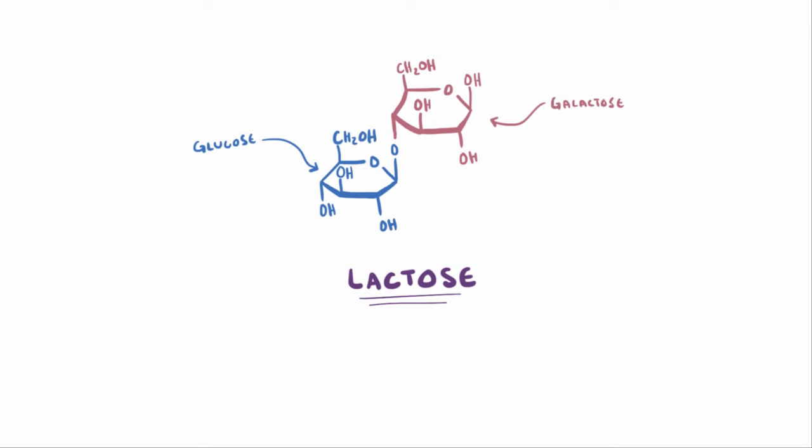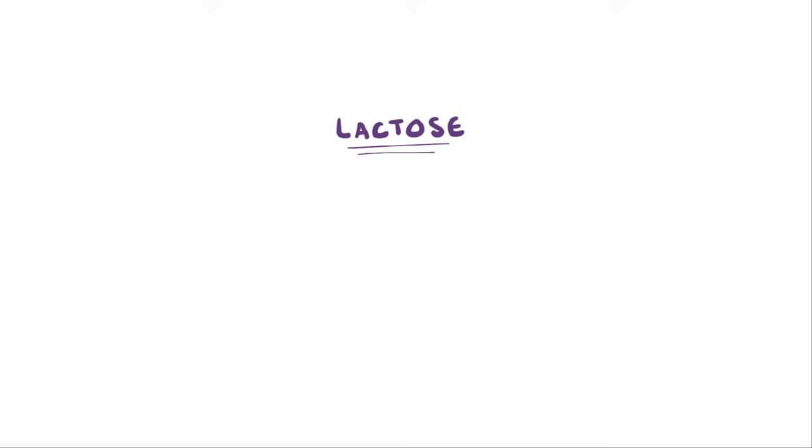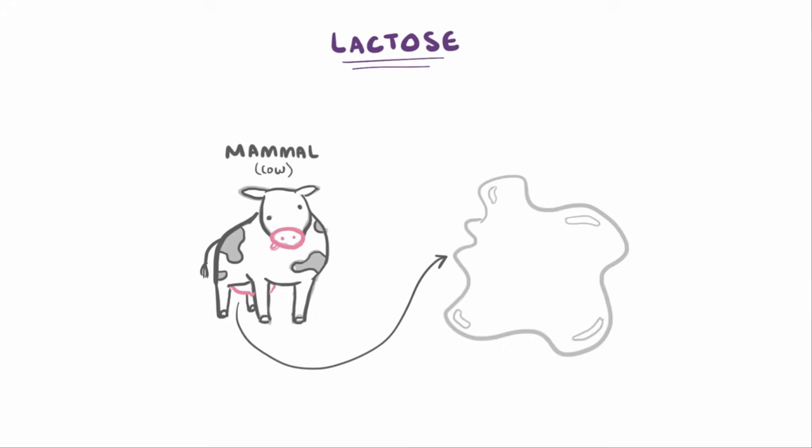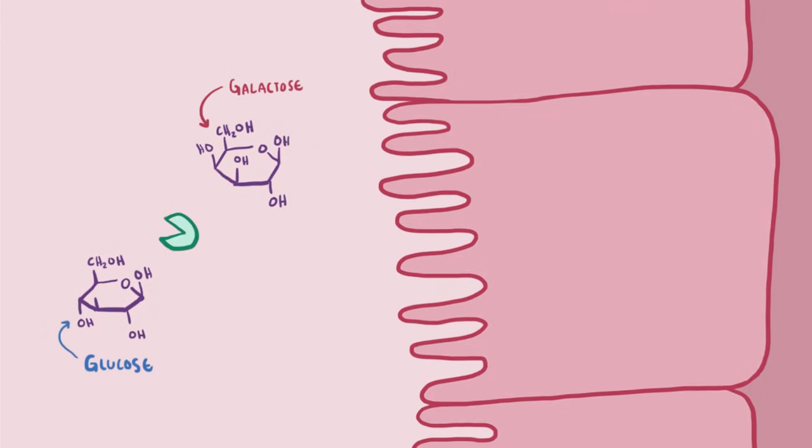For us to use it as energy though, we have to first break it down to those two monosaccharides. In the milk of most mammals, lactose is generally the major carbohydrate, so when you have a glass of milk and it gets through your stomach, the small intestine, that lactose gets chopped into glucose and galactose by an enzyme that's fittingly called lactase.